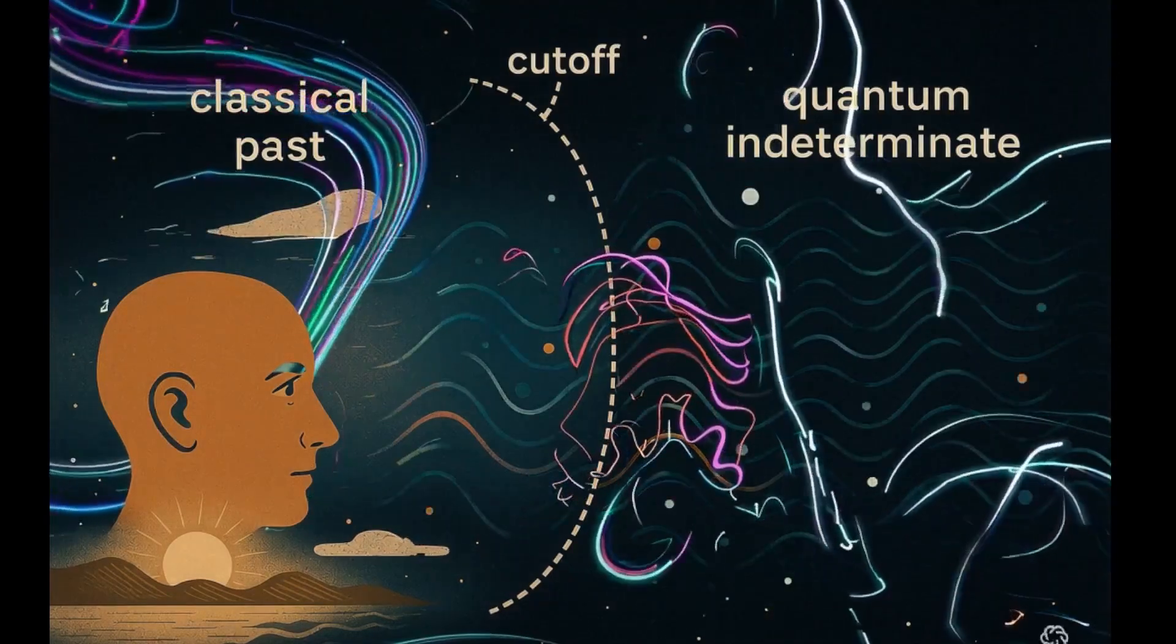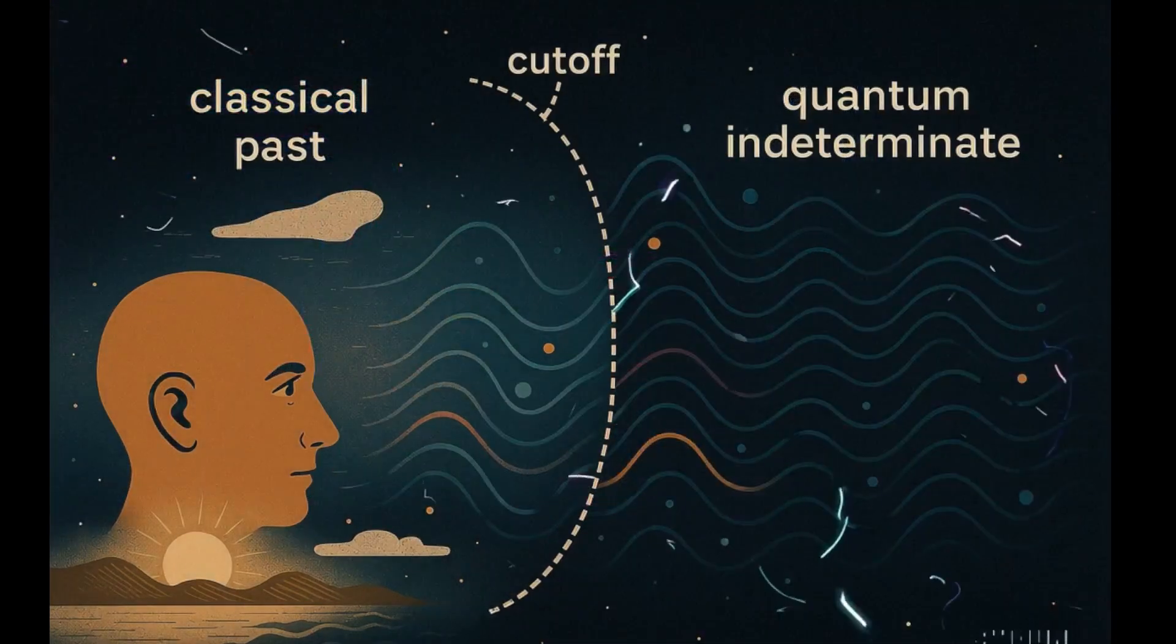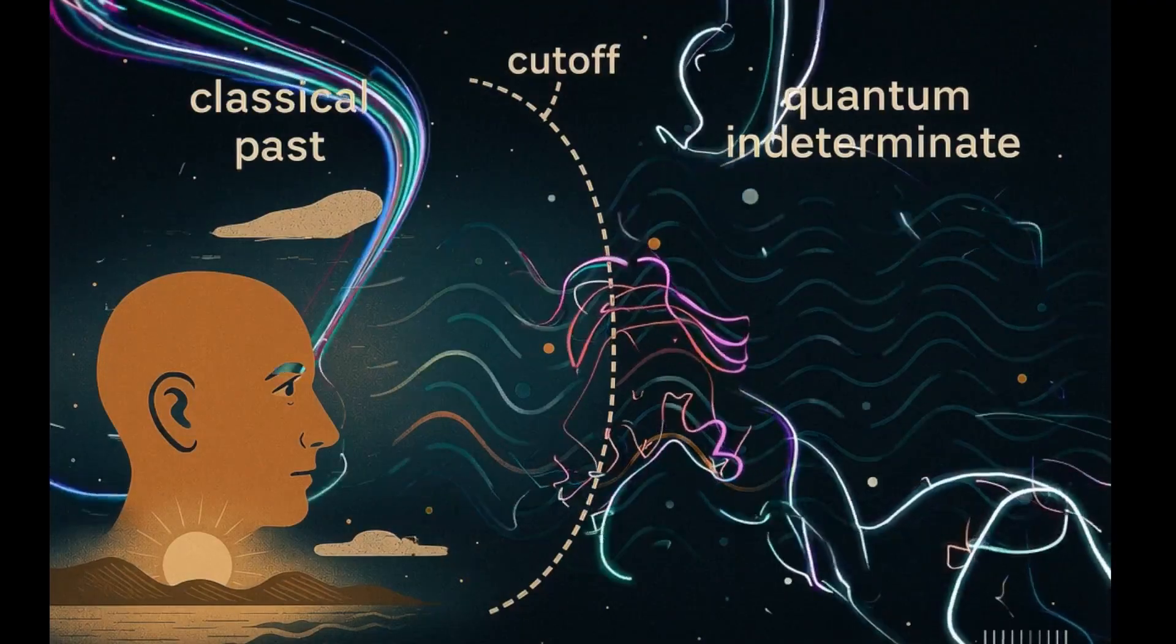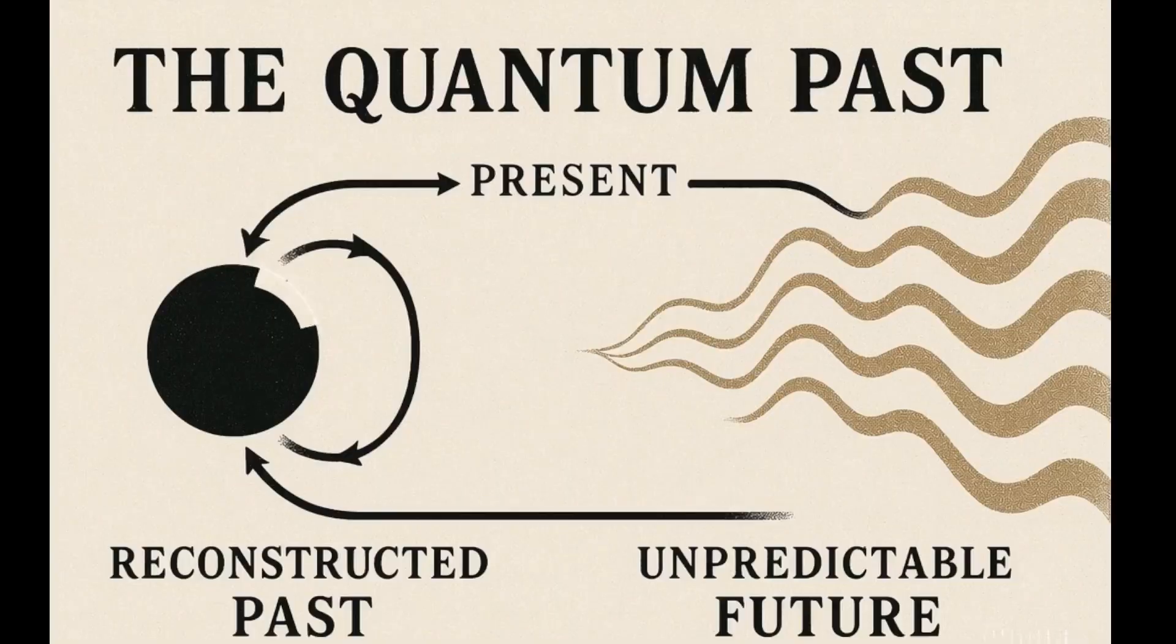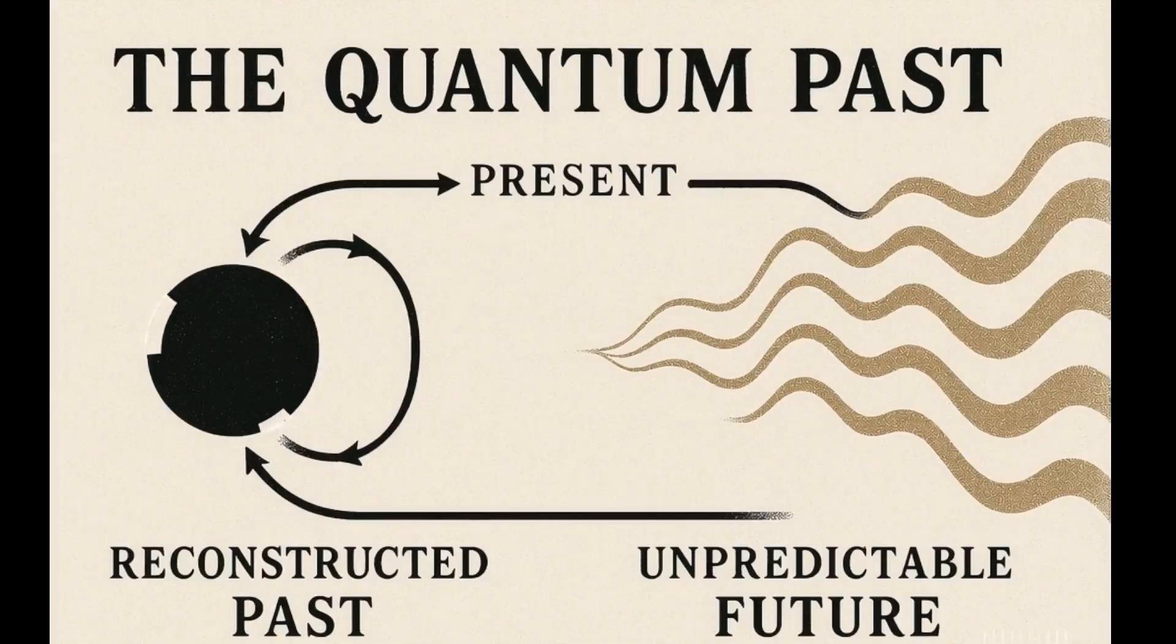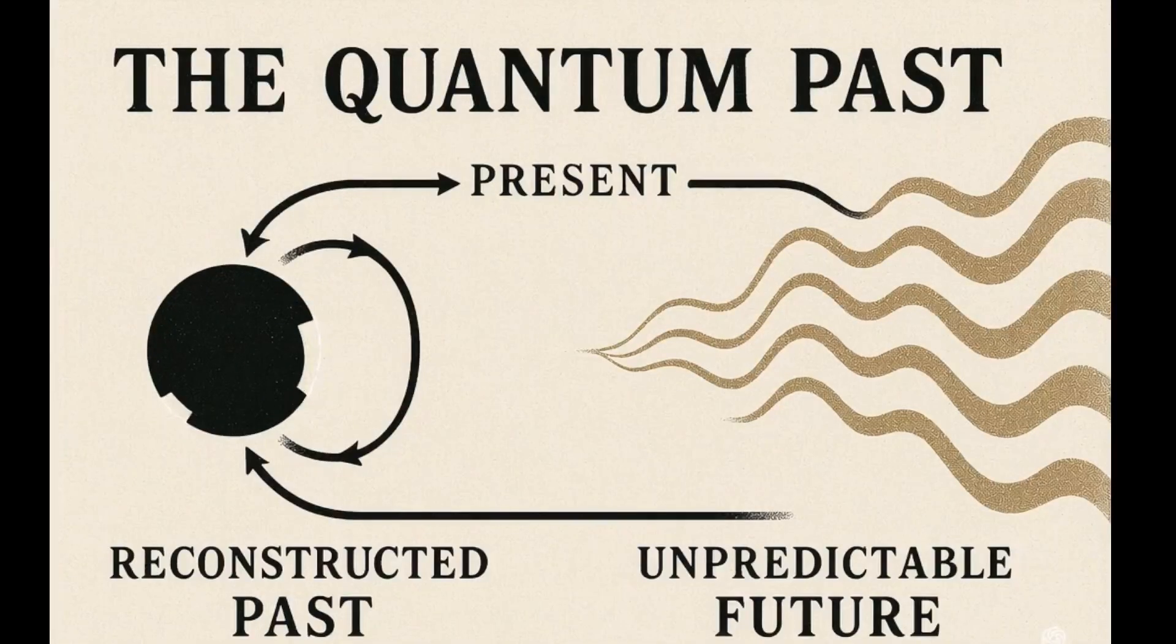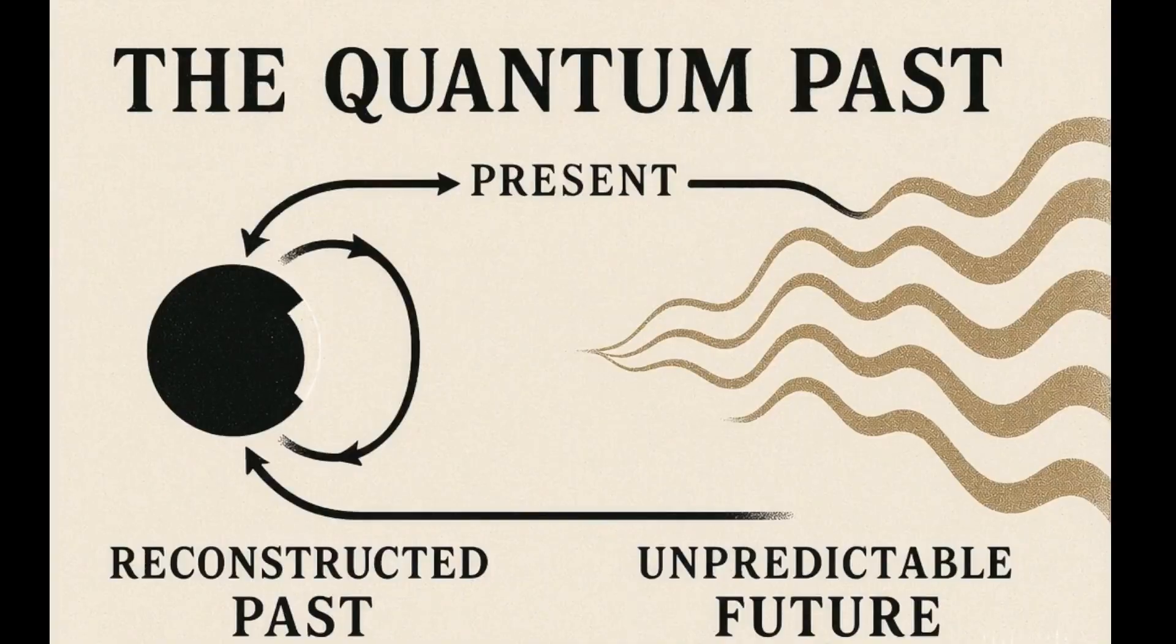This cut-off may arise from thermodynamic entropy, informational loss, or cognitive constraints. But its effect is clear. The past is not a fixed ledger. It is a construct emerging from interaction, shaped by observation, and bounded by the principles of quantum theory.